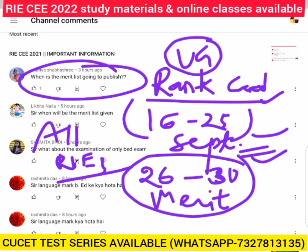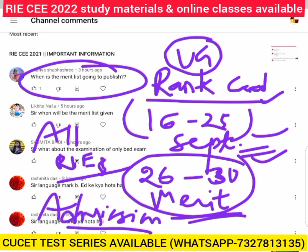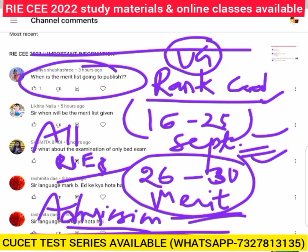After the rank cards, you will get your merit list between 26 to 30 September. After that, your admission process will run for around 15 to 30 days. You will get a detailed video on our channel explaining the admission process.